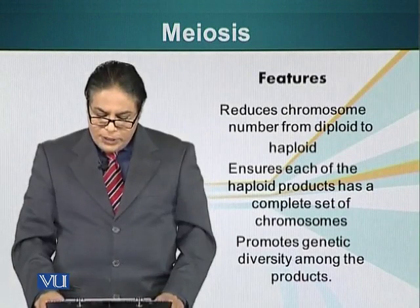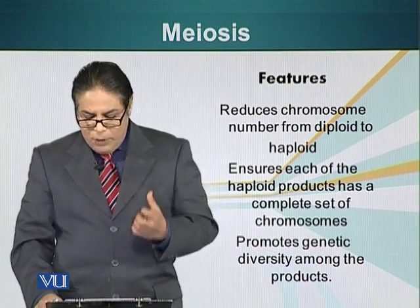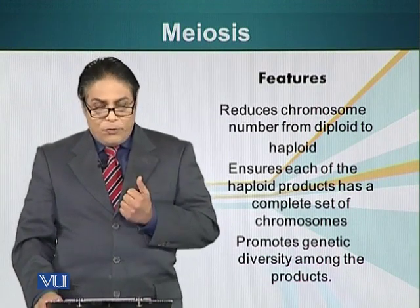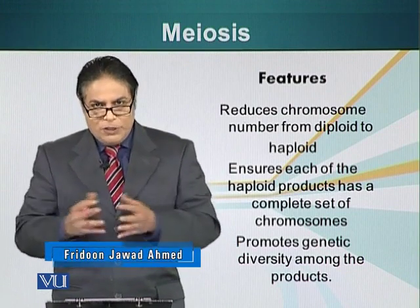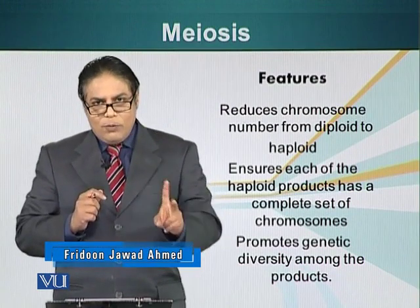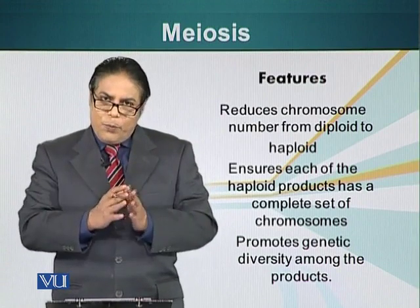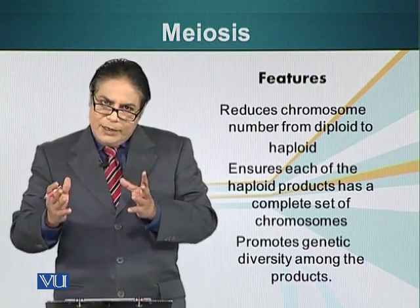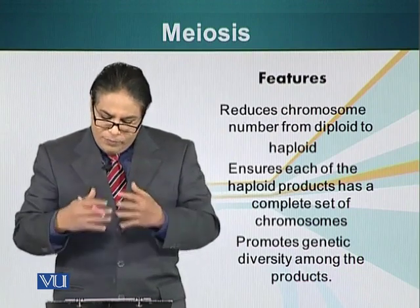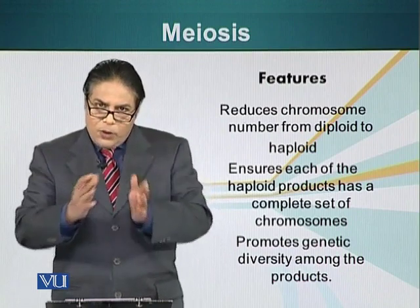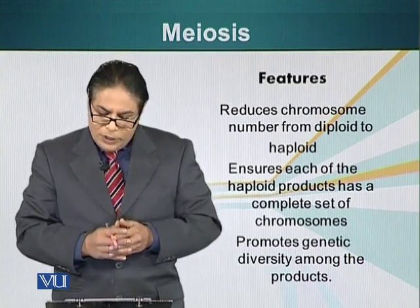Hallmark features of meiosis: it reduces the chromosome number from diploid to haploid, and ensures each haploid product has a complete set of chromosomes. So at the end, all four daughter cells have at least one chromosome 1, one chromosome 2, and so on. It promotes genetic diversity in two ways: by exchanging pieces of chromosomes during the tetrad stage, and by the random arrangement of homologous chromosomes during meiosis 1.